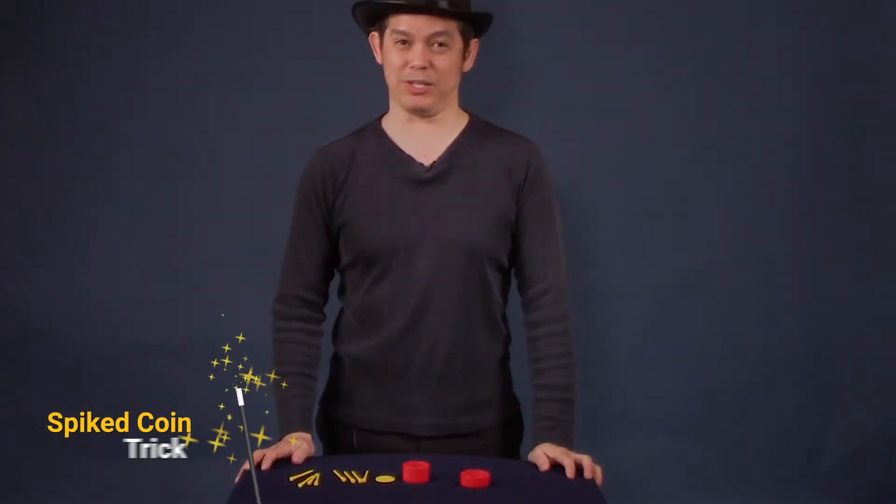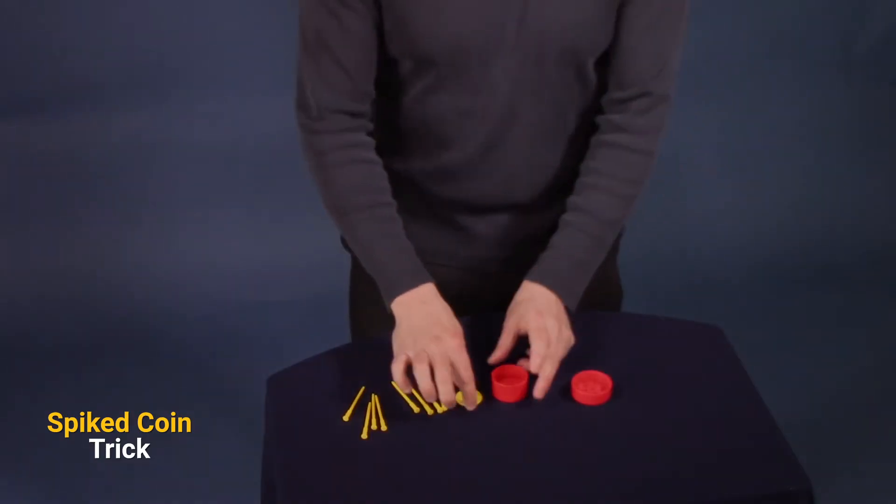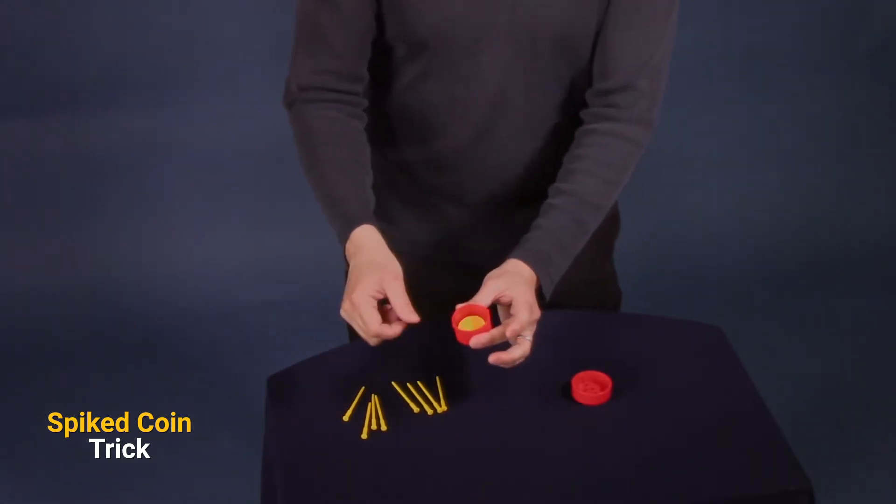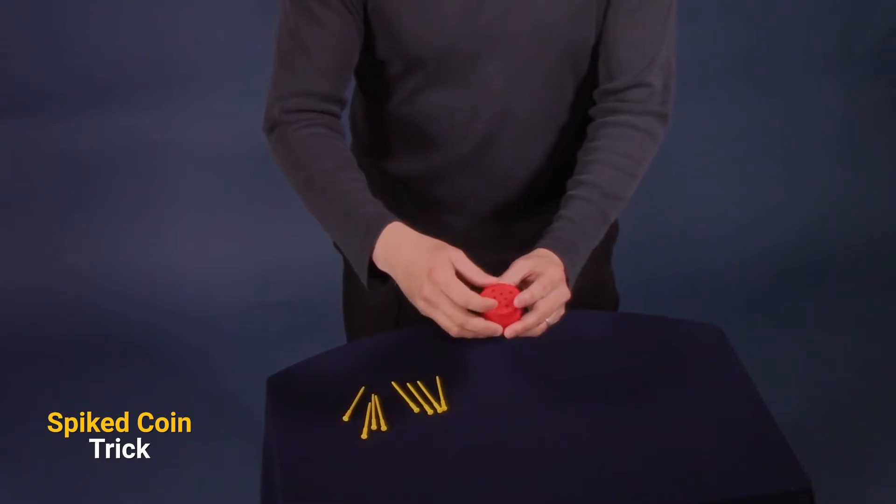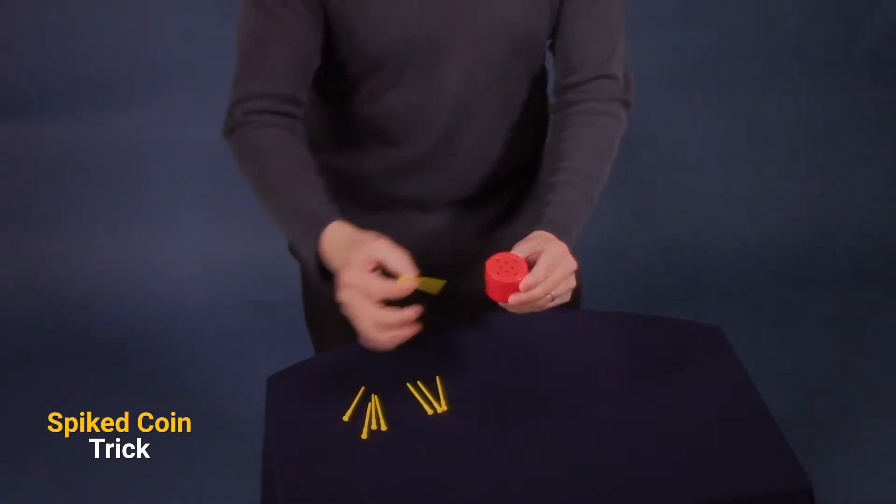This is the spiked coin trick. Now I'm going to take this coin, put it into the box and cover the box. But here's the fun. I'm going to take these spikes and put them right through the coin.